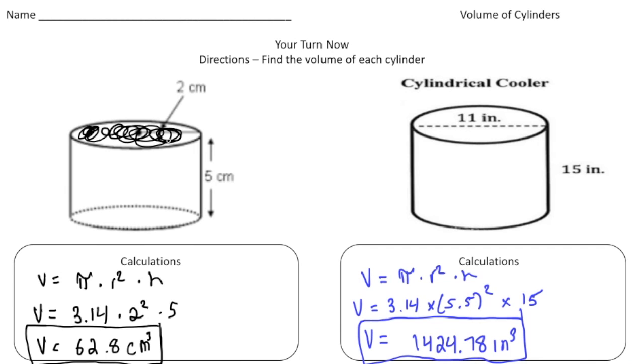It looks like an oval from this angle, but it's a circle. The base of this one is also a circle. Again, it's just the area of the base times the height to get the volume. How'd you do?